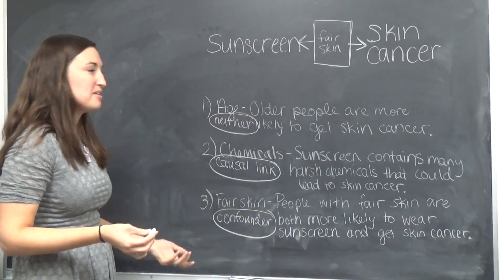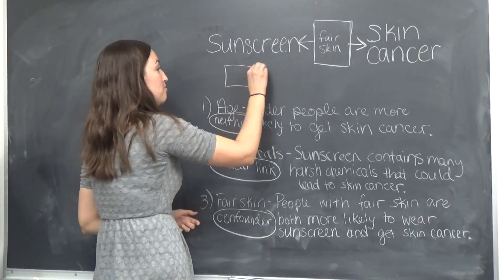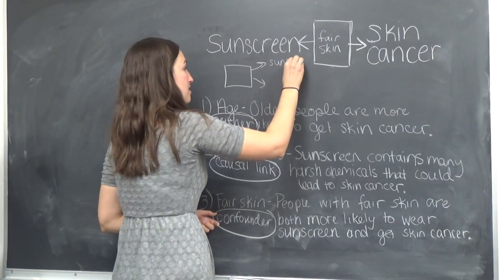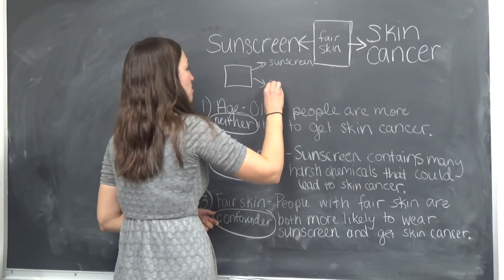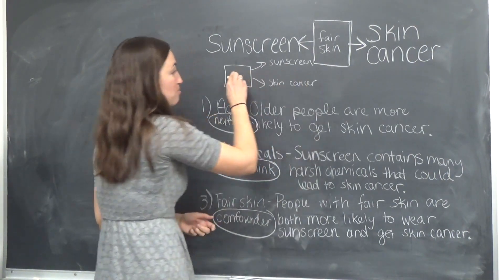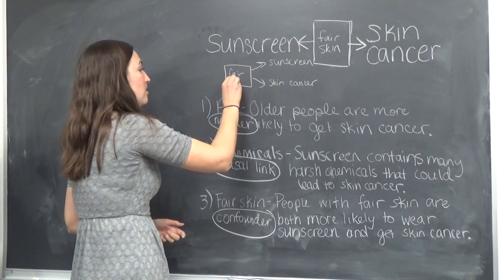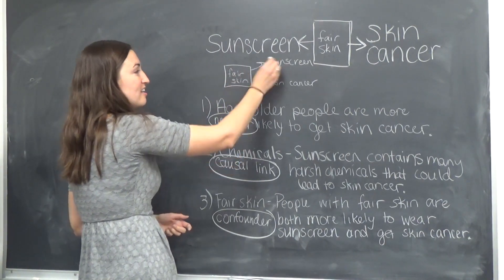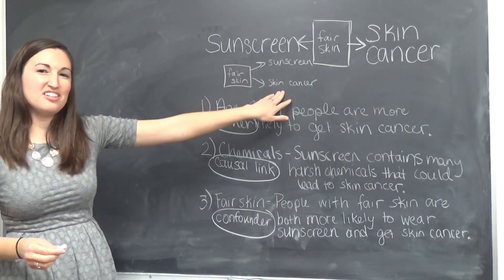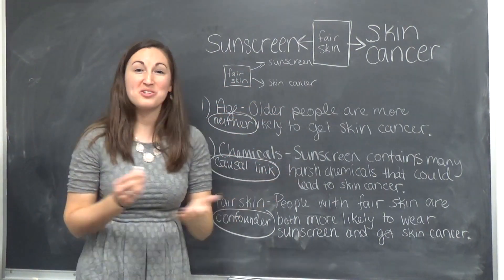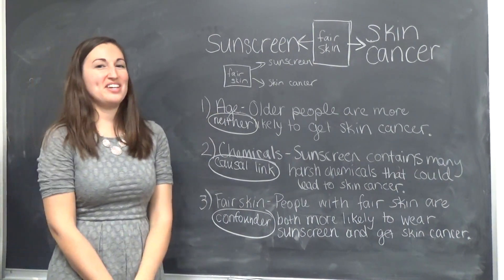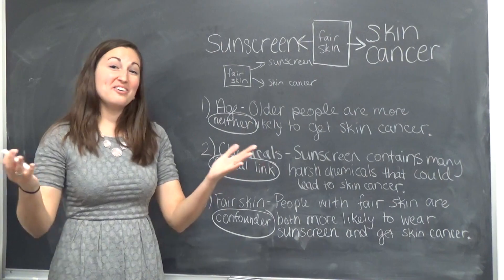Hopefully that helps. This is basically the same thing as what we did before — we just draw the box and the arrows first. Here's the sunscreen, here's our treatment, here's our response which is skin cancer, and then I would just put fair skin right in here. Fair skin is associated: if you have fair skin, you're more likely to wear sunscreen, and if you have fair skin, you're more likely to get skin cancer. Whichever way works for you is totally fine. I'll see you guys next week in class.